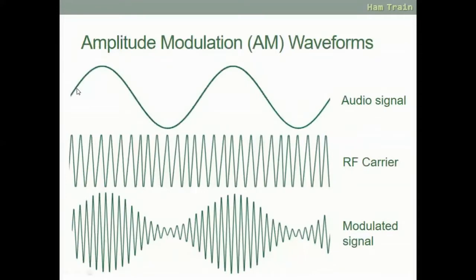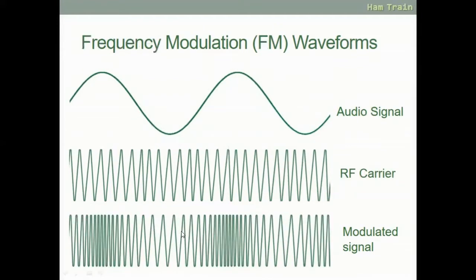Here we have our audio signal and our RF carrier. To mix it into an AM signal, you'll notice that where there's a high peak in the audio signal, we have a much larger amplitude in the wave, and where we have a low trough, we have a smaller amplitude. With frequency modulation, it's similar — where you've got a high peak in the audio signal, you have a higher frequency, and in the low troughs you have a lower frequency.